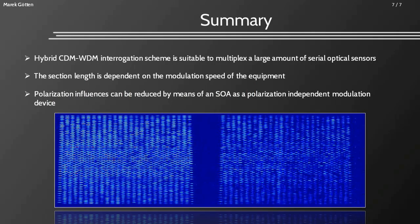To summarize: the hybrid CDM-WDM interrogation scheme is suitable to multiplex a large amount of serial optical sensors — in this case 50 sensors at the same wavelength multiplied by 80 sensors at different wavelengths, totaling 4,000 sensors. The length of the section defines the modulation speed; so far we could go down to 1 meter, which means a chip duration of 5 nanoseconds. By using an SOA as the first modulation device, a better suppression of interference is achieved and polarization effects are massively reduced, so that the difference spectrum is more stable when moving the fiber and changing the state of polarization. This means the actual wavelength shift used for measuring is acquired with lower impact of a fluctuating peak height. In general, this interrogation scheme has a lot of potential for interrogating a large amount of serial optical fiber sensors.